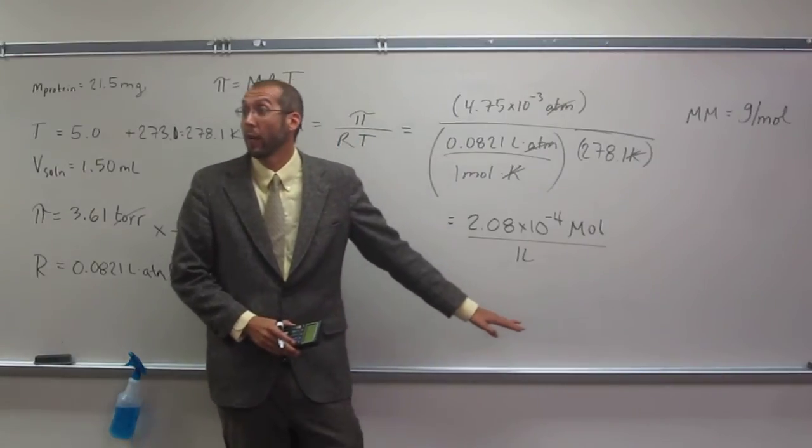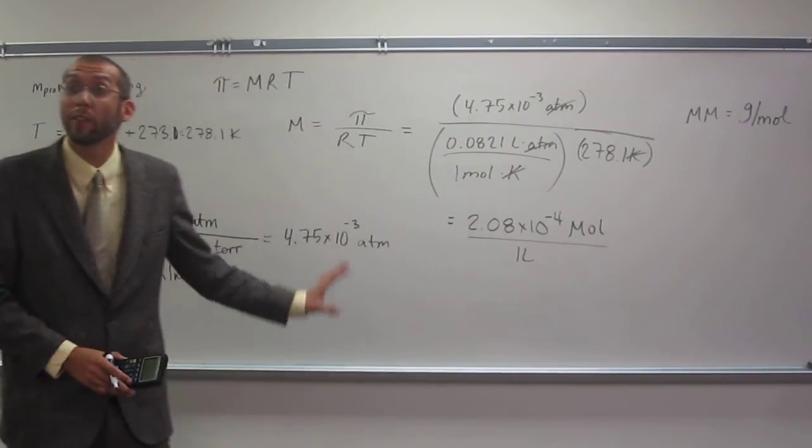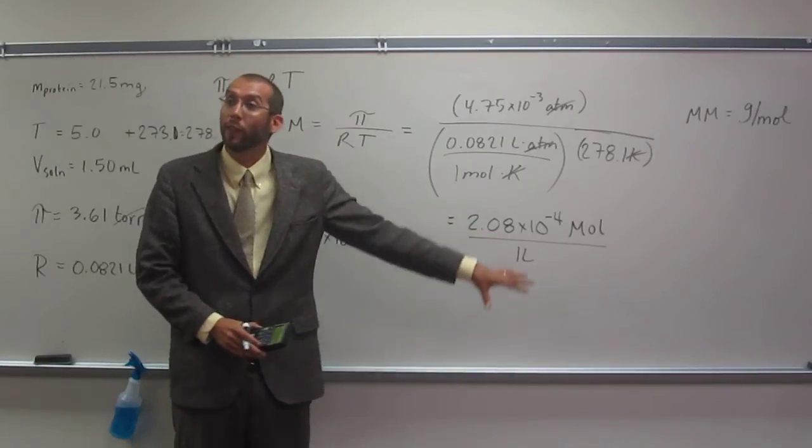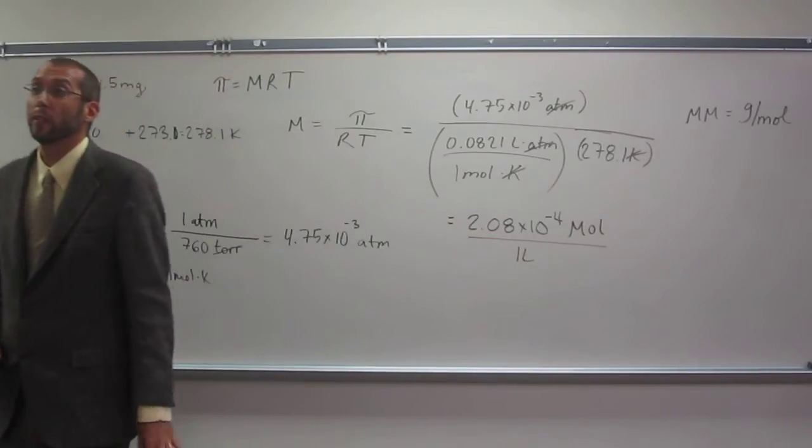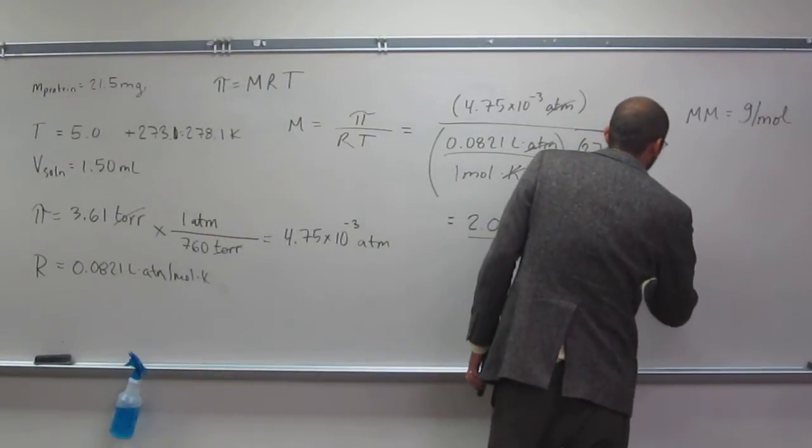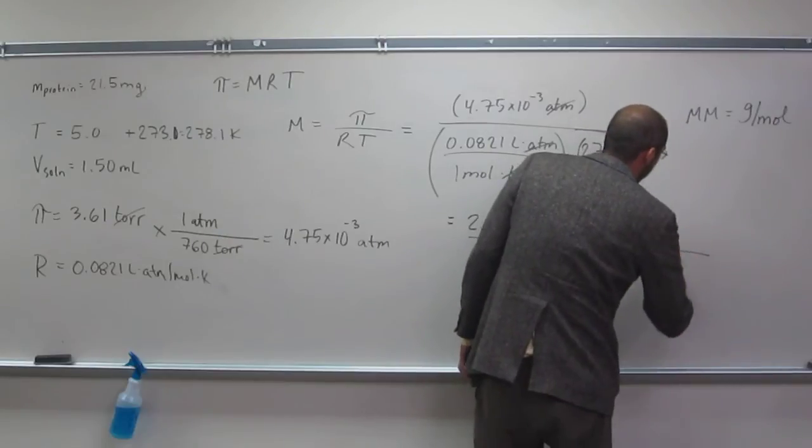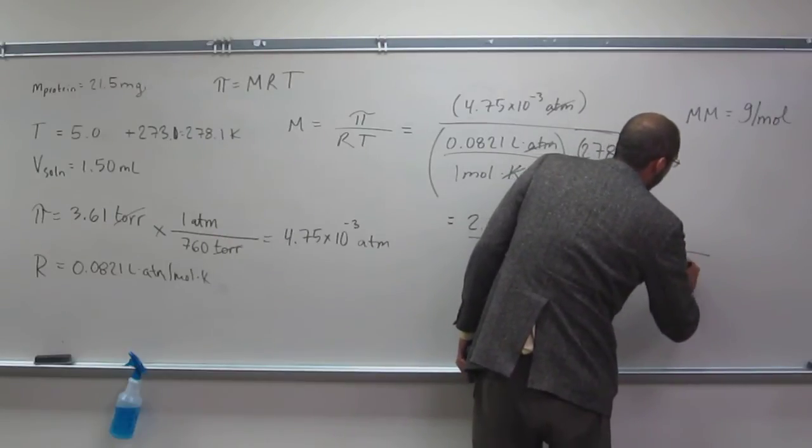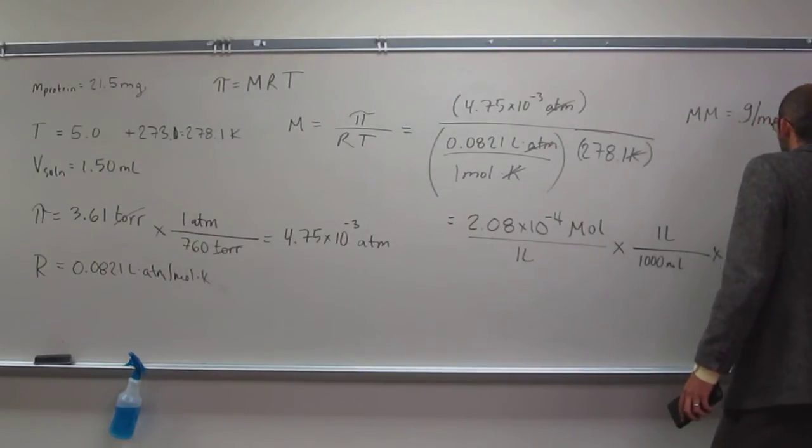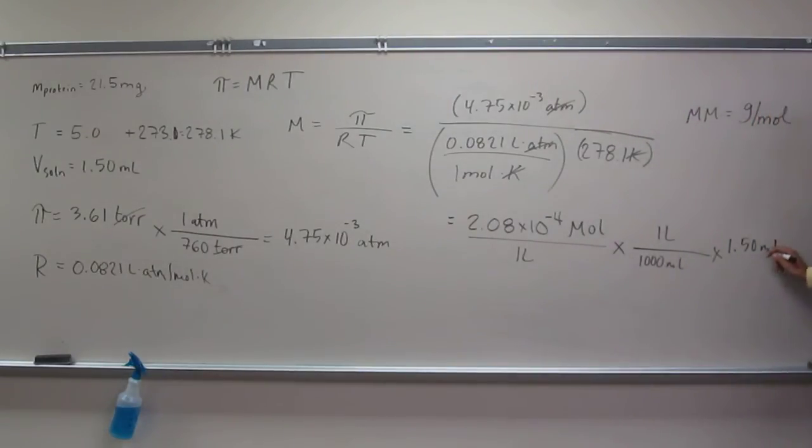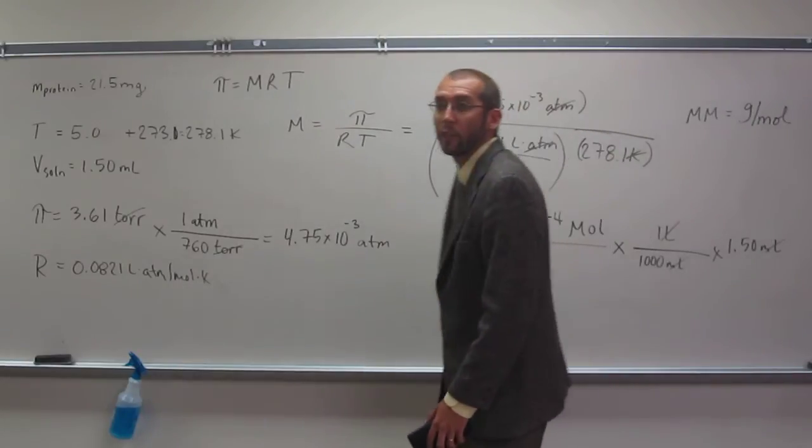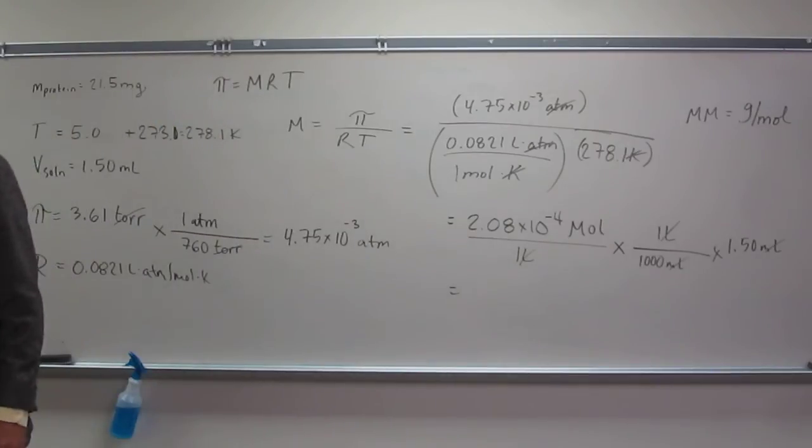1.5 mls, right? So we're going to have to figure out how many moles is in 1.5 mls. Is everybody okay with what I'm saying? So, we want to, remember, 1 liter equals 1,000 mls, times 1.5 mls. If we cancel, that should give us the number of moles of protein. Is everybody okay with that?